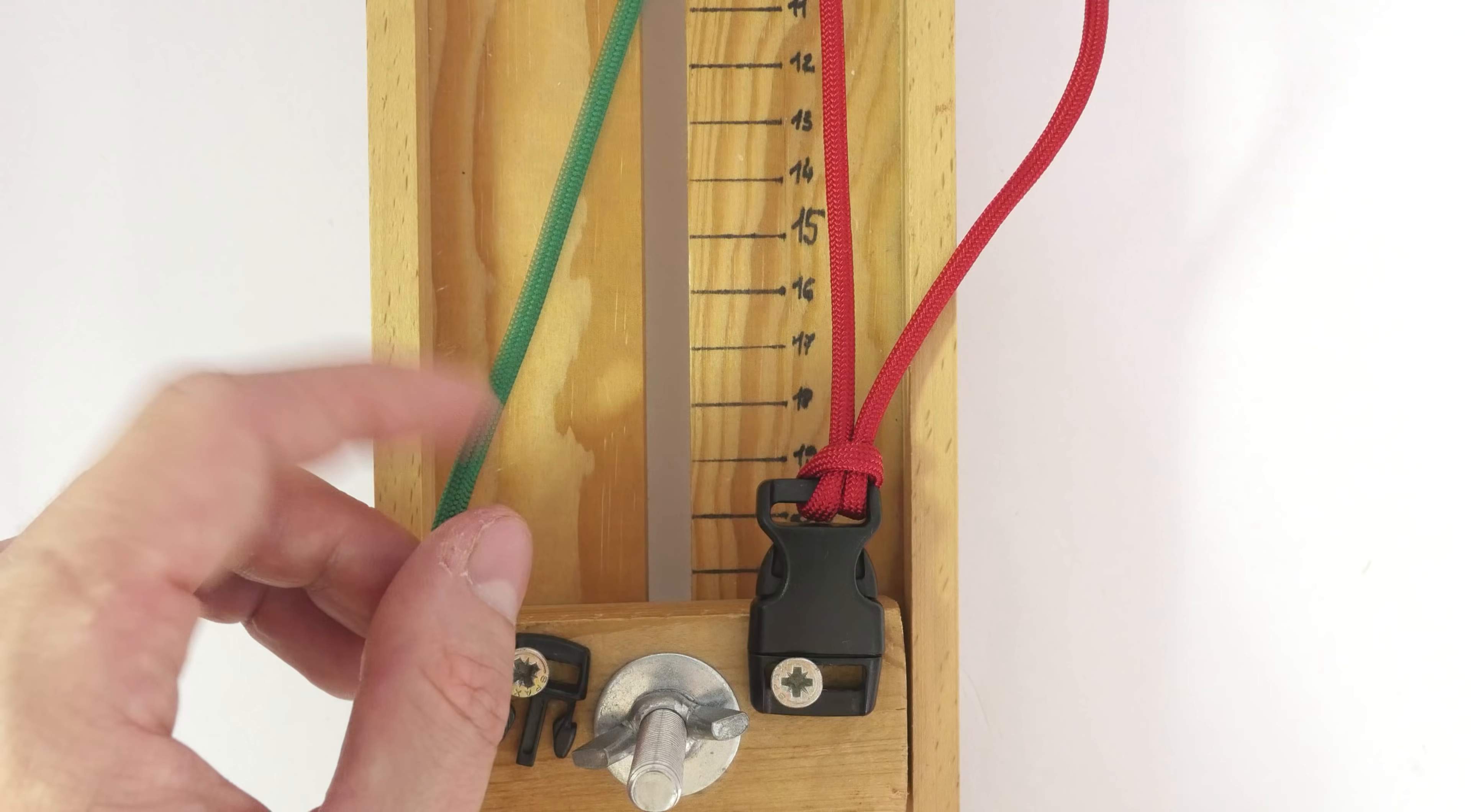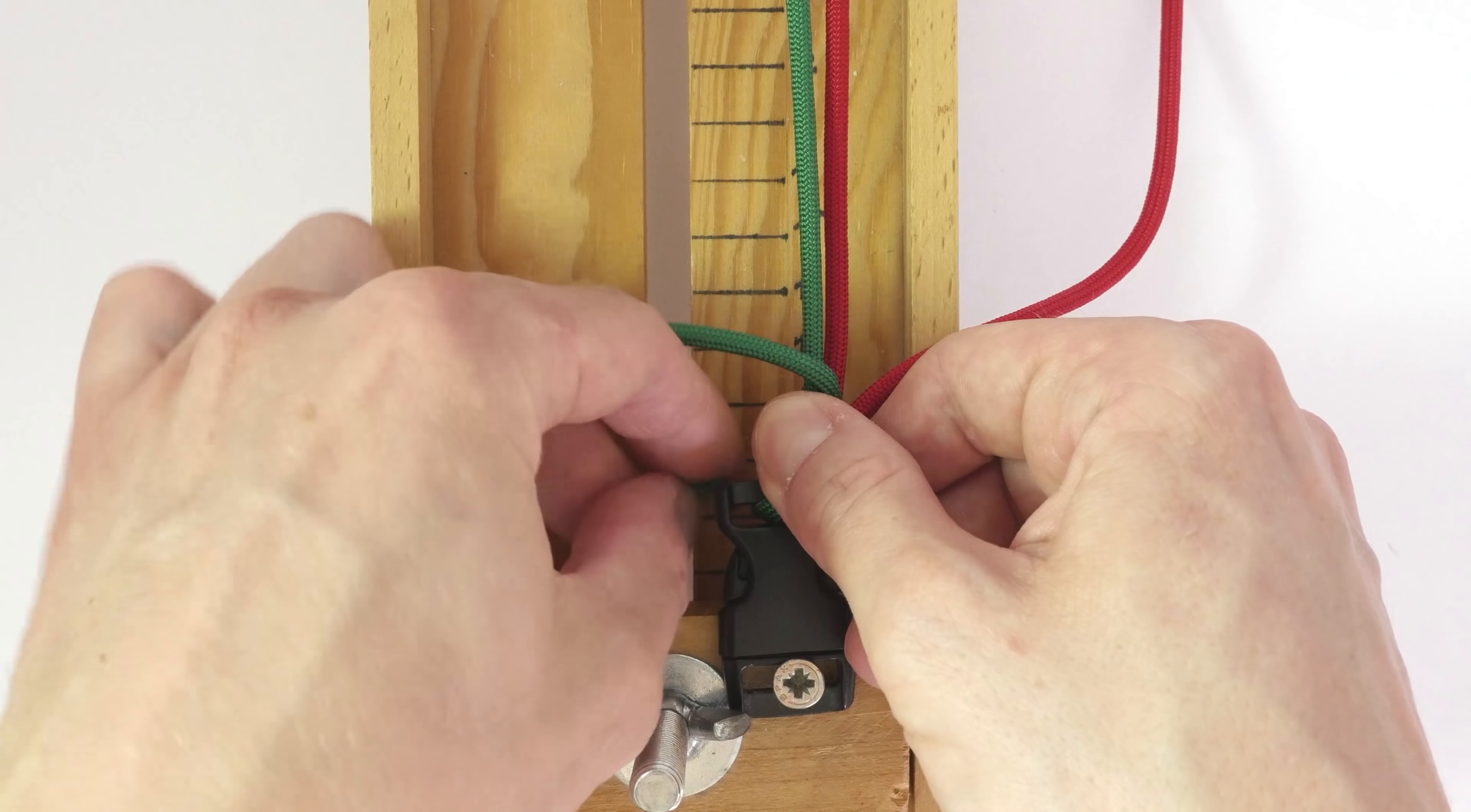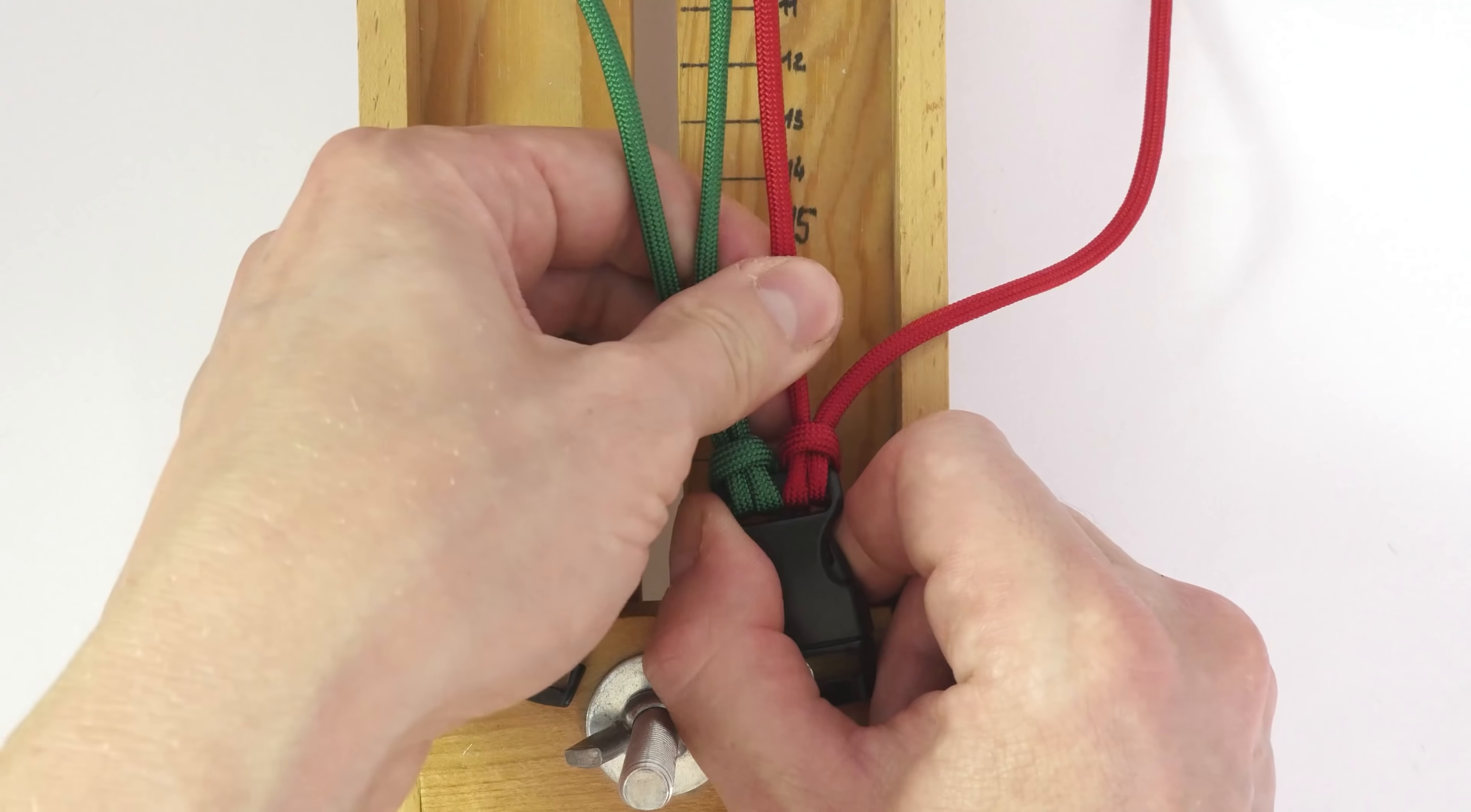Now a second one with the other end. Top down through the buckle end like this, pass over like this, then bottom up through the buckle end like this, and finally through this loop. Tighten up, tighten up, and we now have two cow hitches at the bottom.